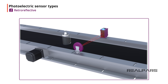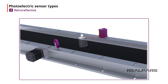Some disadvantages of using a retro-reflective sensor are: you have to install the sensor with a reflector; if the object is shiny, it might turn on the sensor's output instead of the reflector; and the light beam is not as focused as a through-beam sensor's light beam. If the object is shiny, you can try adjusting the angle of the sensor and reflector compared to the object.